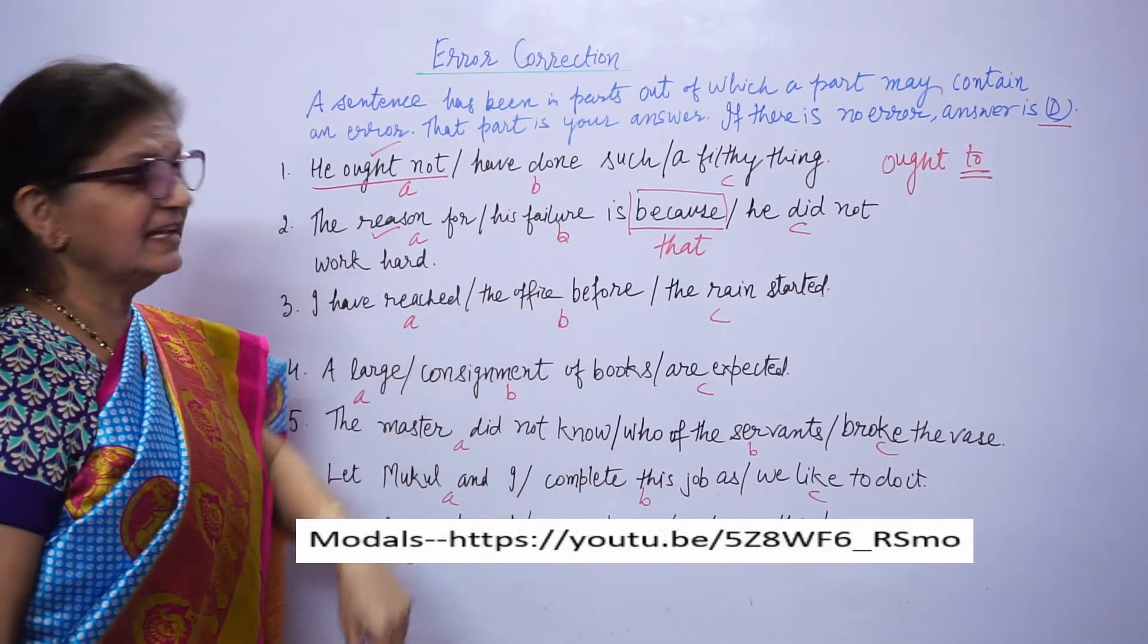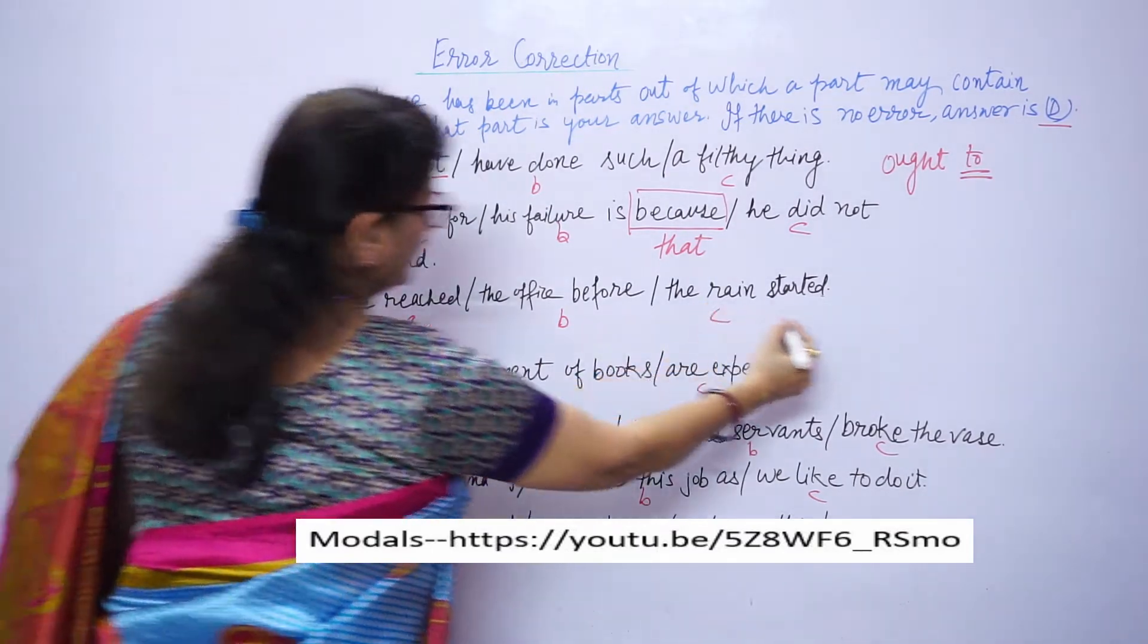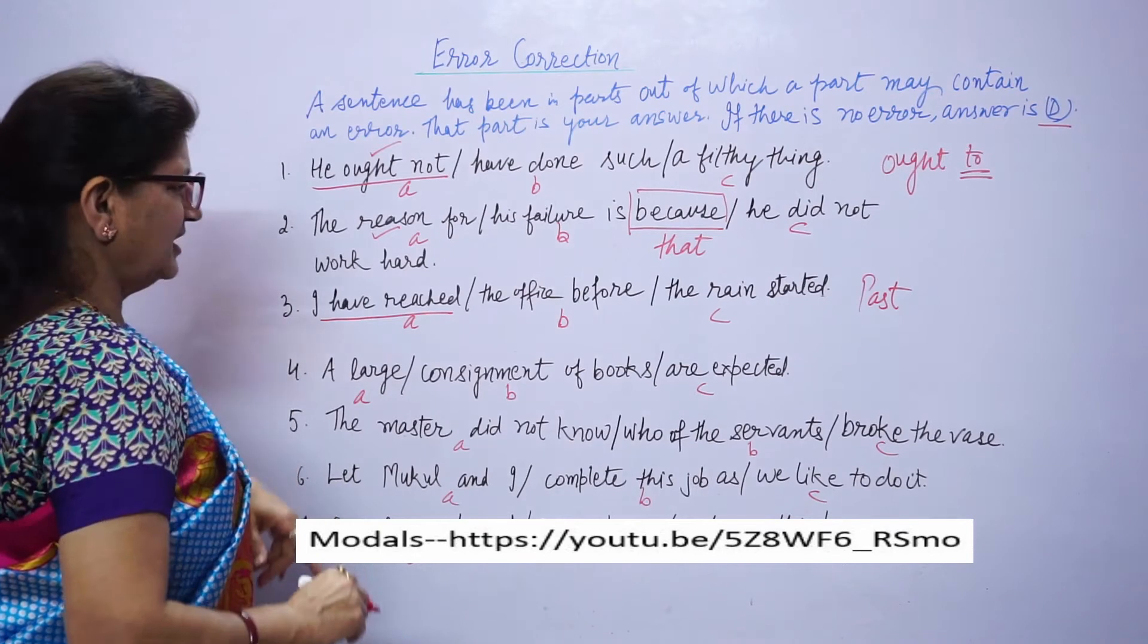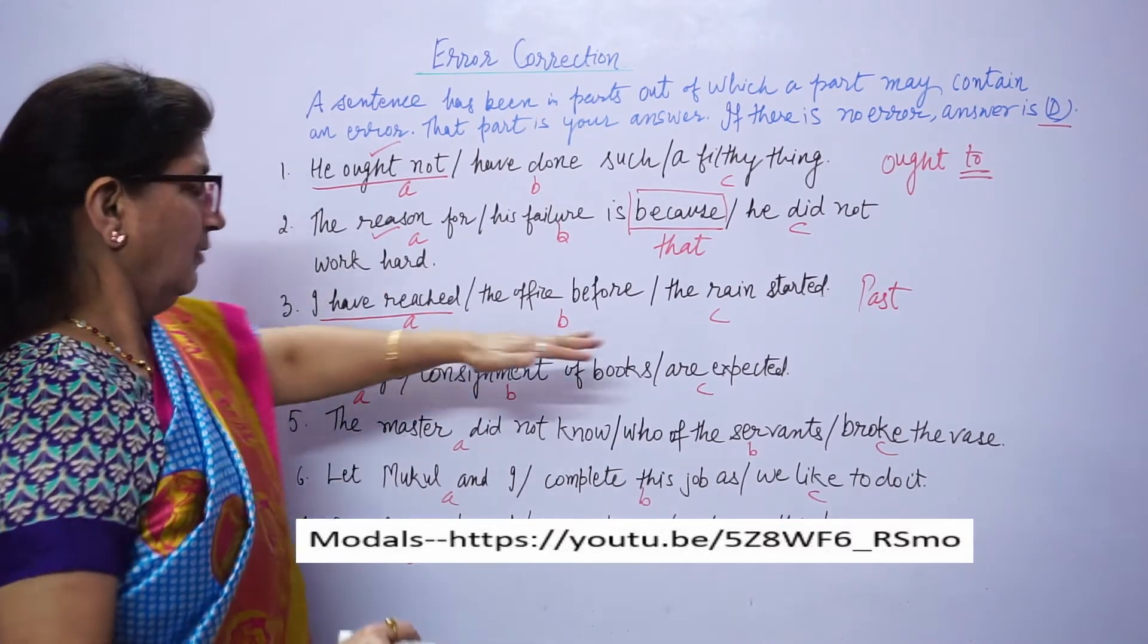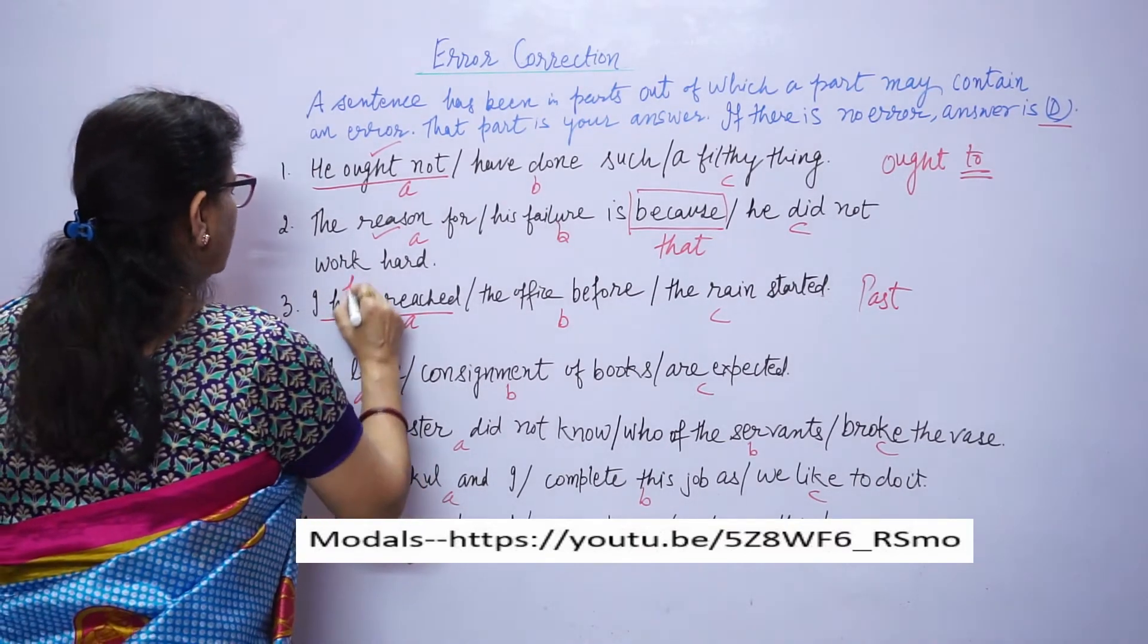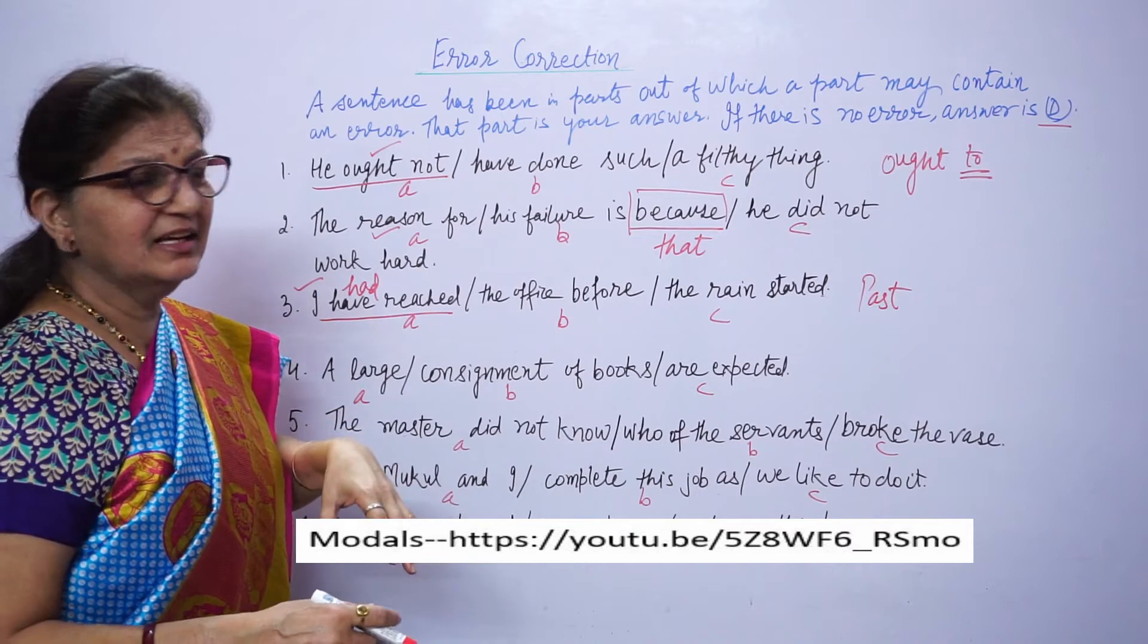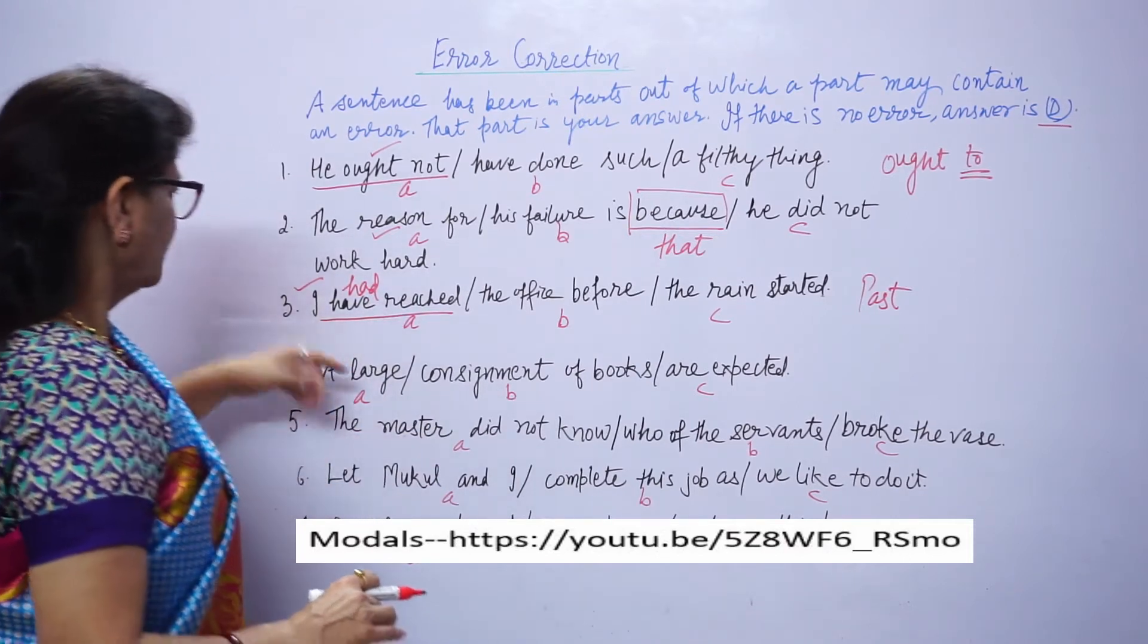I have reached the office before the rain started. The office before, it means its past tense. But in the part A, present tense has been used, I have reached, so here is error. When we did tenses, I told you, one clause is in past time, then in one clause, past perfect tense is used, so I had reached. Your exam may have alternatives or may not.